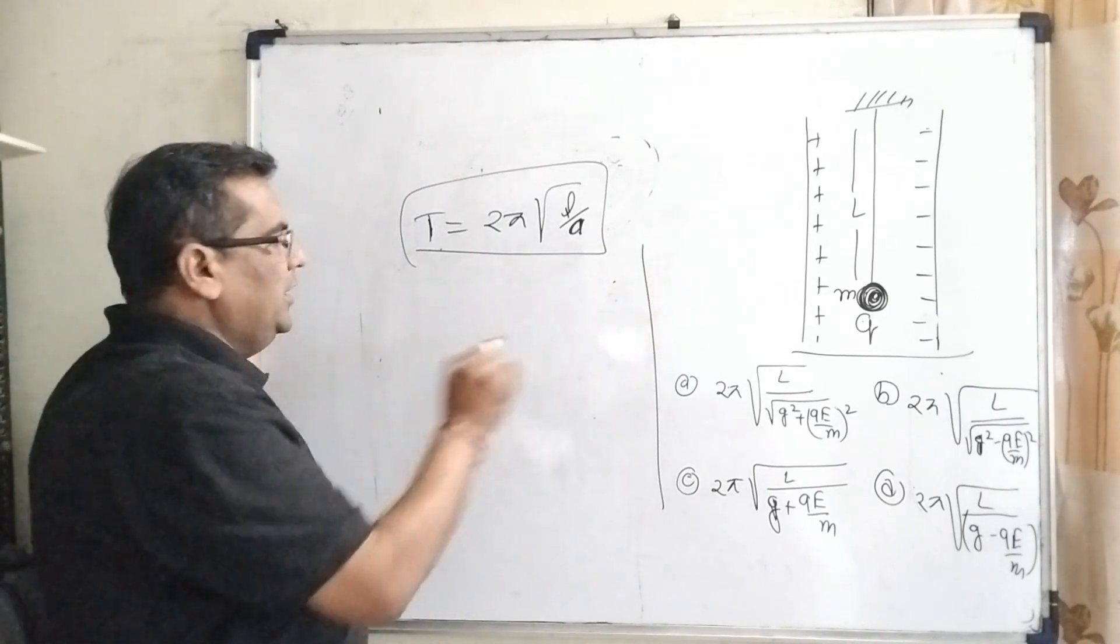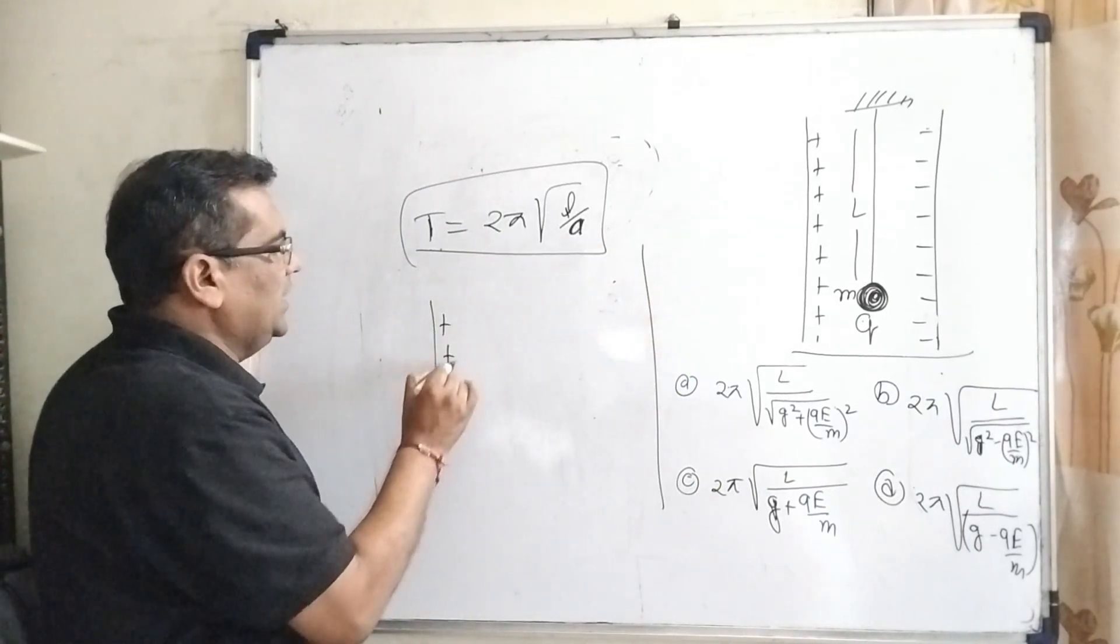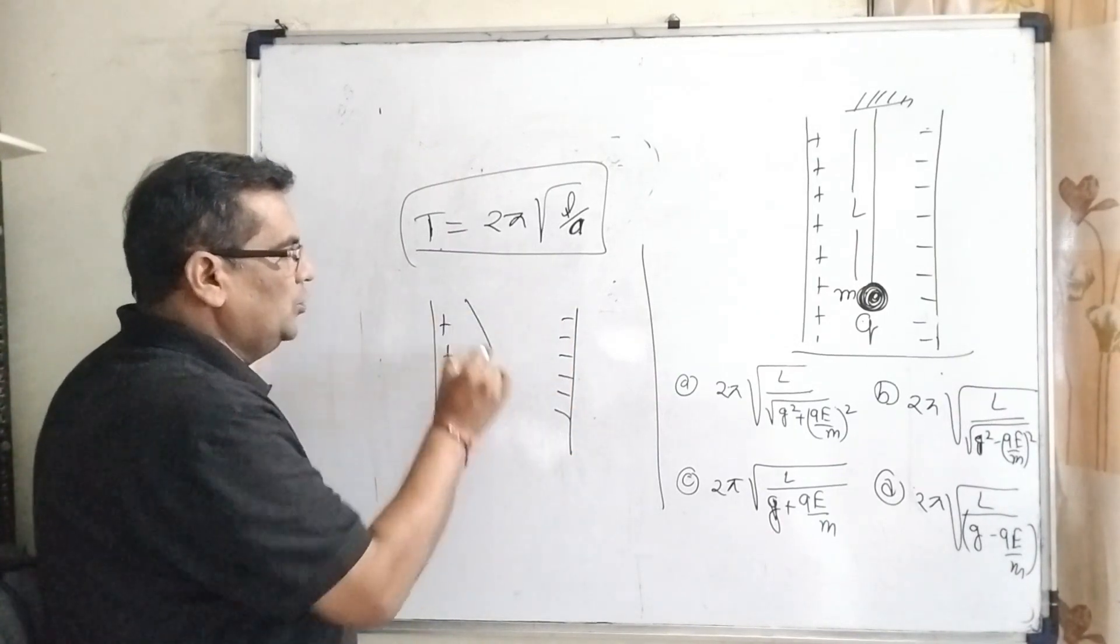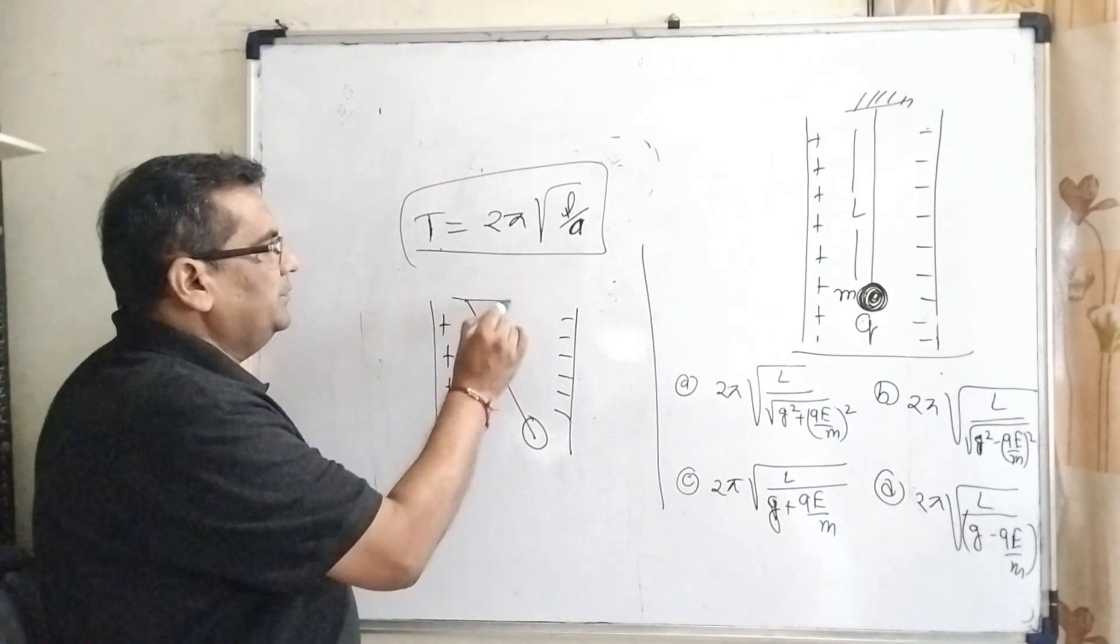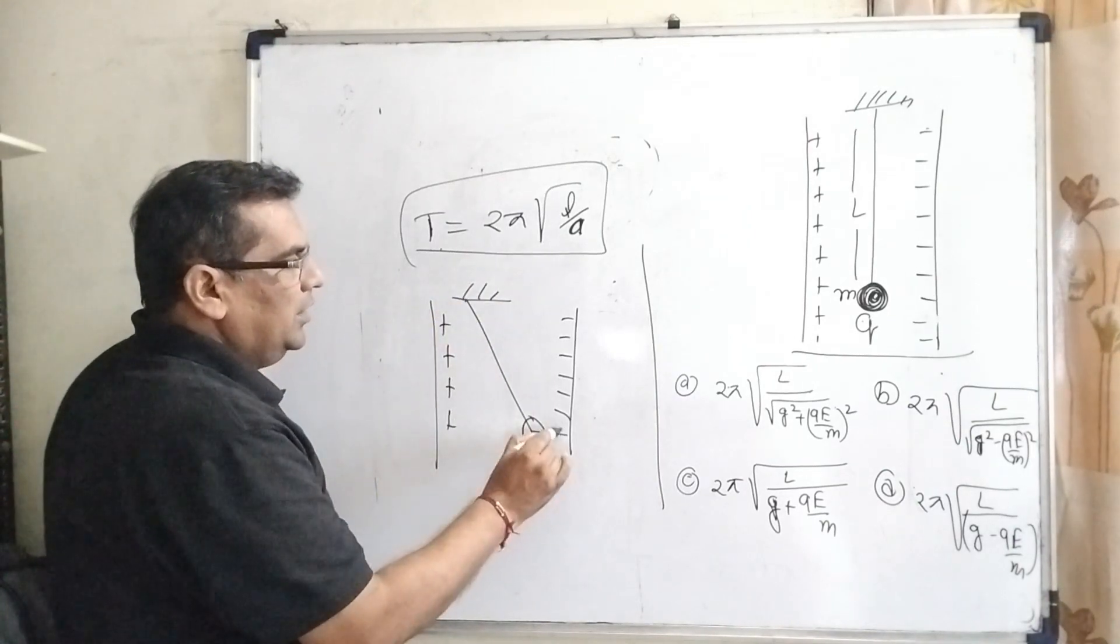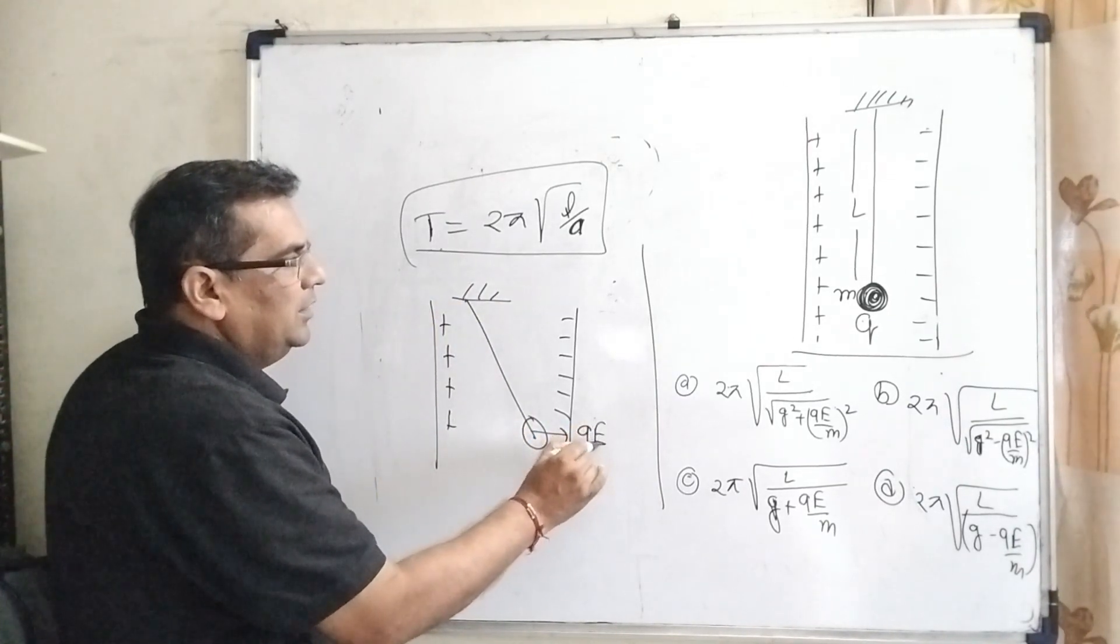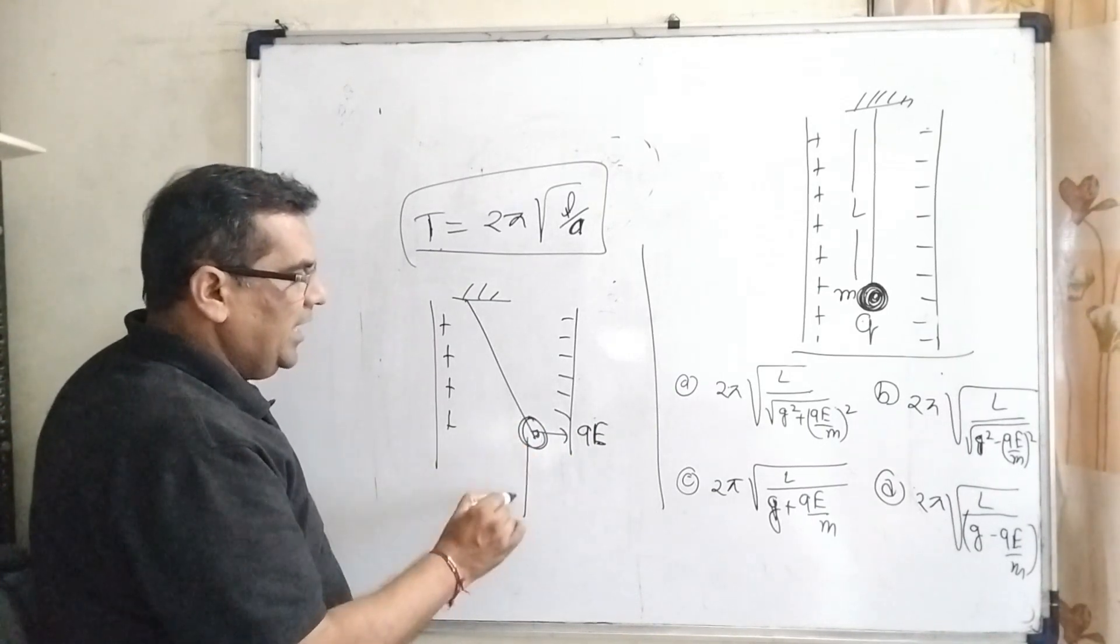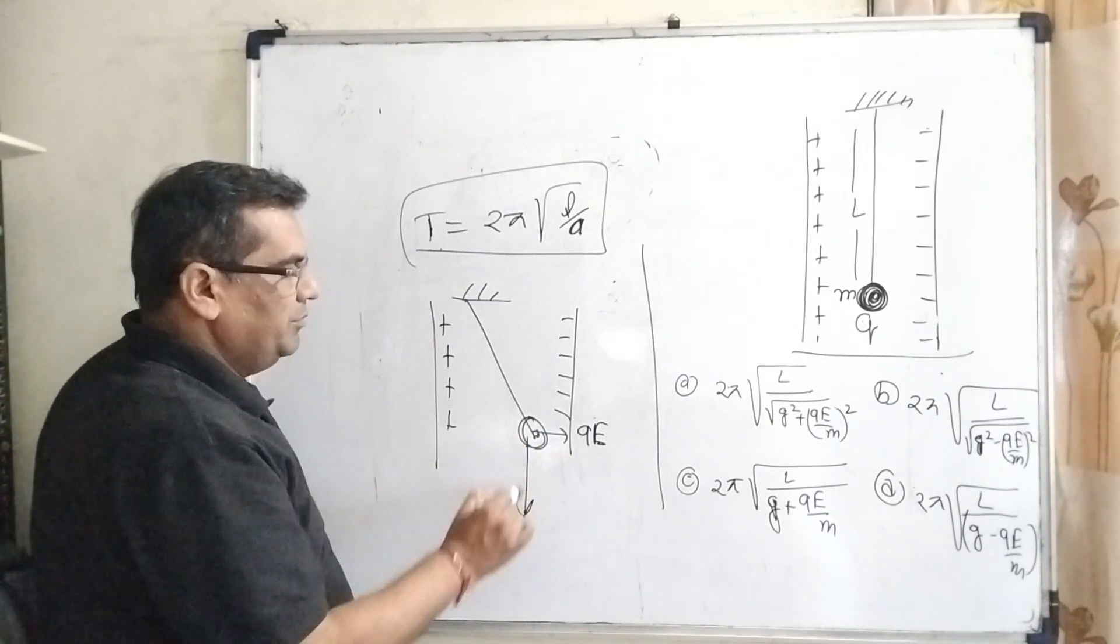As you know, here the simple pendulum oscillates between two plates. It means here two forces act on it. First, qE electrostatic force, and due to the weight which acts in downward direction, Mg.